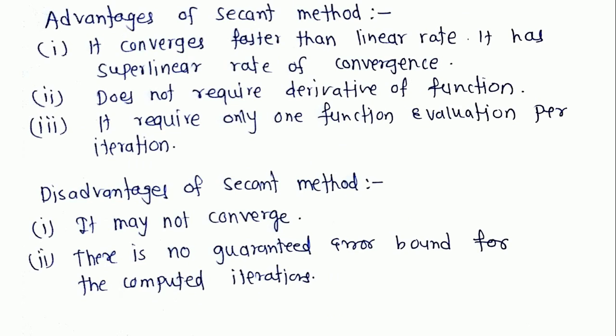Here are some advantages and disadvantages of the secant method. This method converges faster than the linear rate — it has a higher rate of convergence than the bisection method. It does not require the derivative of the function; it requires only one function evaluation per iteration, whereas Newton-Raphson method requires two function evaluations per iteration. A disadvantage is that it may not converge, and there is no guaranteed error bound for the computed iterations.